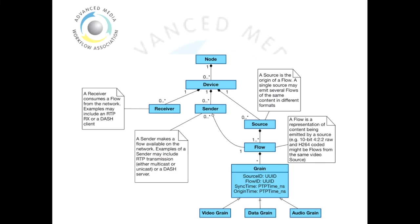As discussed in an earlier screencast, a grain carries with it a number of identifiers and timestamps. These are a source ID, identifying the source it came from, a flow ID indicating the flow it is part of, and two timestamps — the synchronisation and origin timestamp.